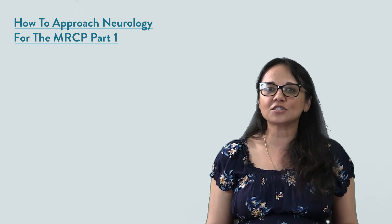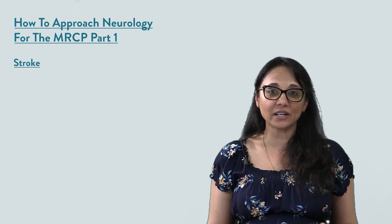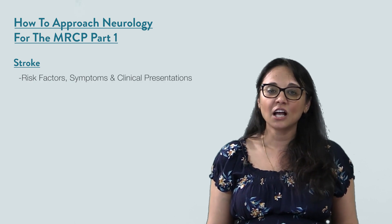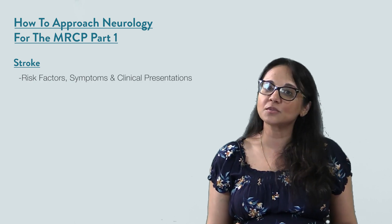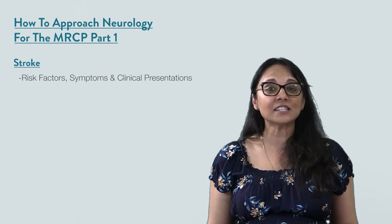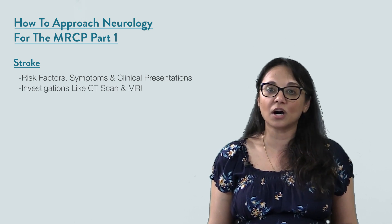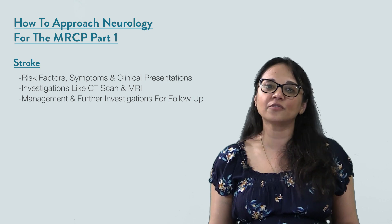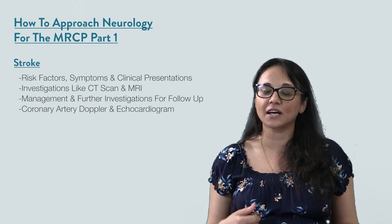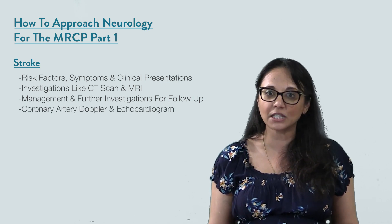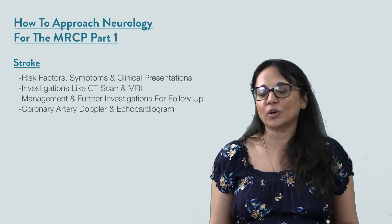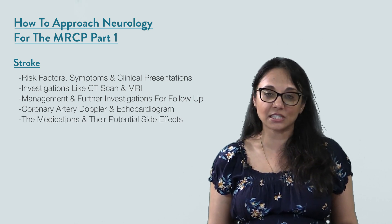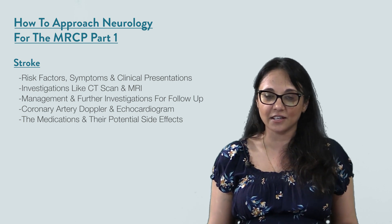So what are the pathologies that you need to learn? The first big one is stroke. You need to understand the risk factors as well as the symptoms and the clinical presentation, the investigations — CT, MRI for diagnosis — but also management and further investigations and follow-up such as coronary artery dopplers, echocardiograms, and 24-hour tapes. It's important for you to understand the medications and the potential side effects.